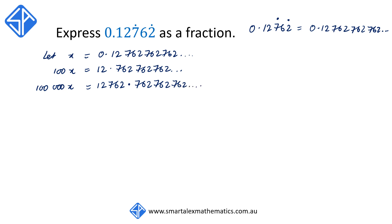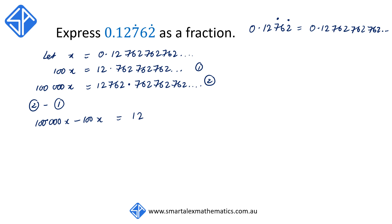We now have the situation where all the digits after the decimal point are identical in equations 1 and 2. Doing the same thing, from equation 2 we're going to subtract away equation 1. So we have 100,000x take away 100x is equal to 12,762.762... take away 12.762...